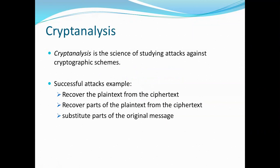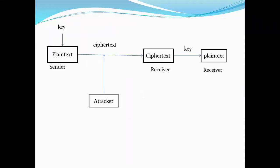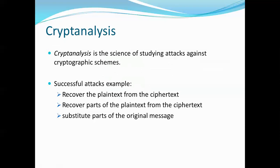Now we will see an example of how the encryption and decryption process works. The sender has plaintext and, using a key, encrypts it into ciphertext, which is sent over an insecure channel. The receiver also has the key and uses it to decrypt the ciphertext back into the plaintext. In this process, an attacker on the insecure channel can obtain the ciphertext.